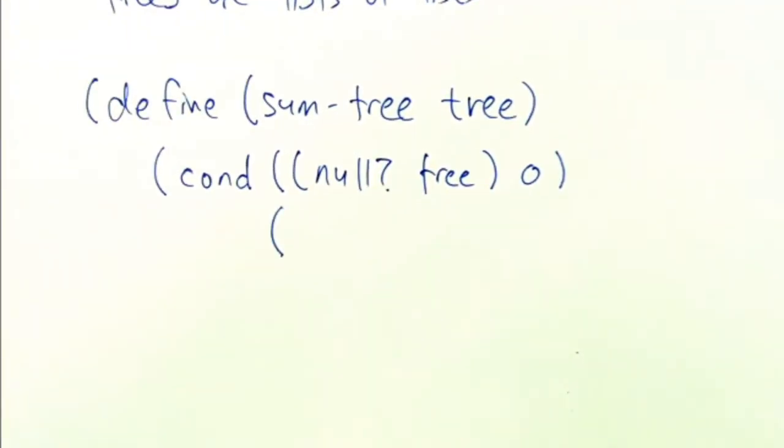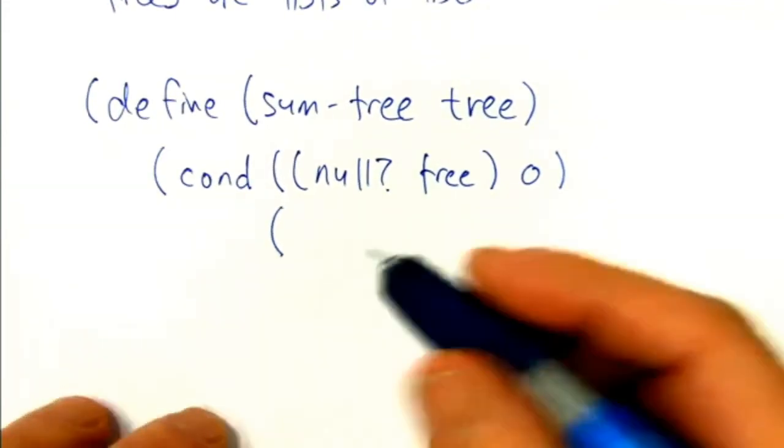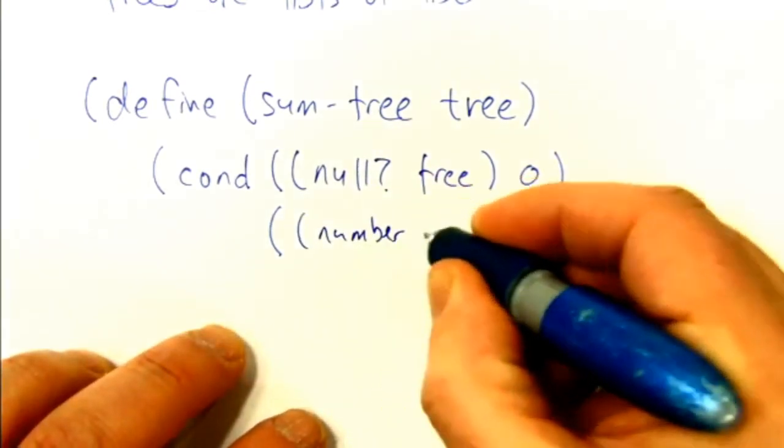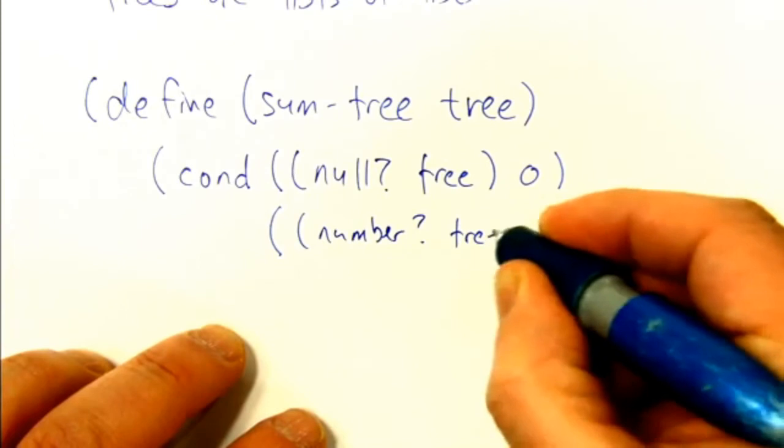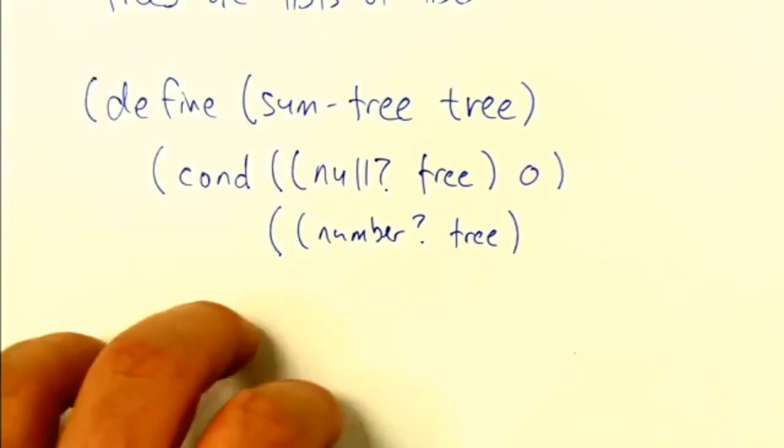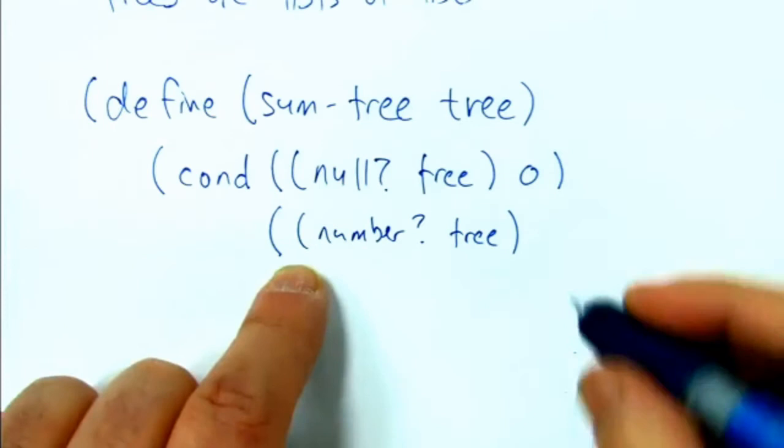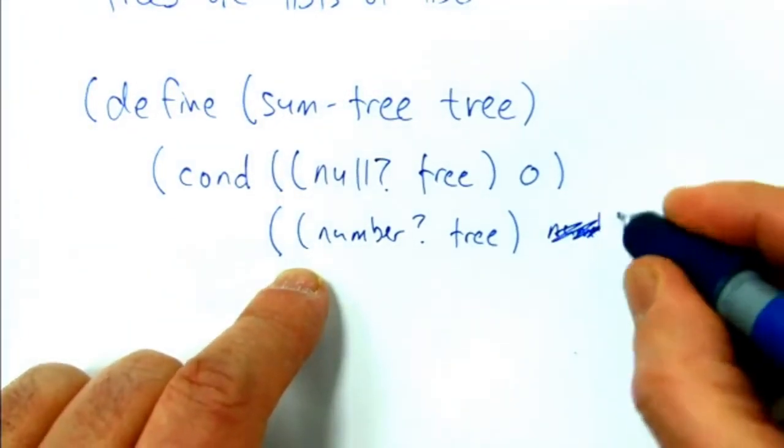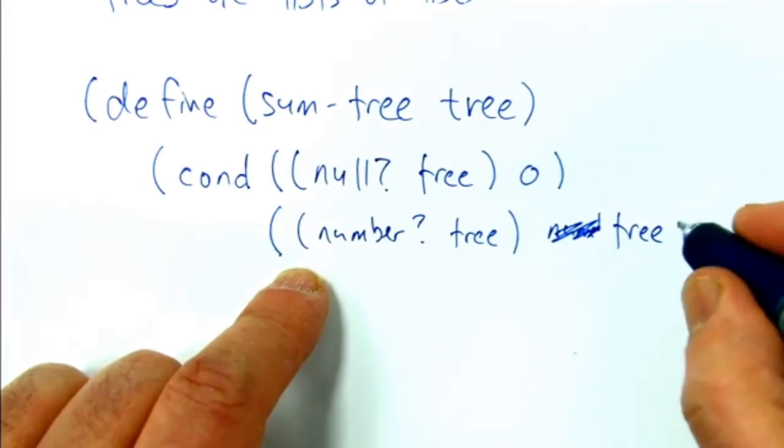The next thing we want to think about is, what if we've recursed our way all the way down and we've just got a number? What do we do with that number? What's the sum of a number? It's the number itself. So here's the way we're, so we could write it as like this number, question mark. So even though the parameter is tree at this point, we might have recursed our way down or we're just dealing with a number. We could say, is it a number? And in which case then we're just going to produce the number back. The sum of a number is that number.